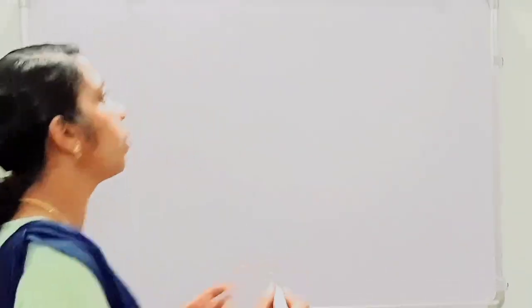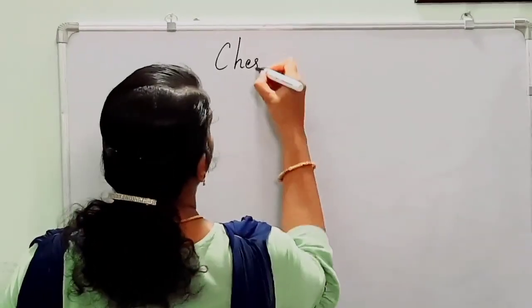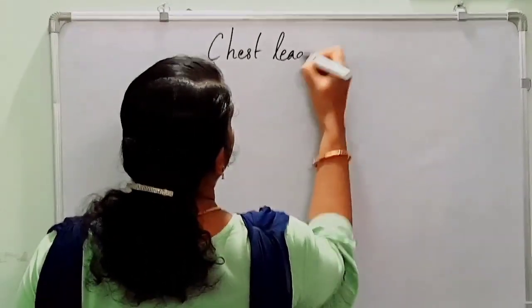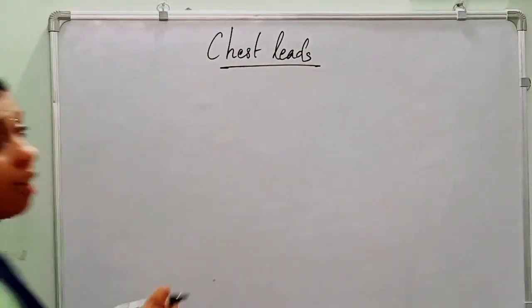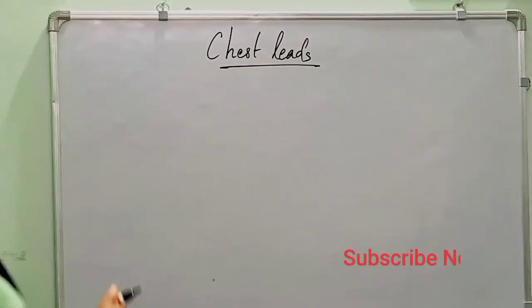We are discussing about the standard 12-lead ECG. In a 12-lead ECG, in the last class we discussed that there will be 10 electrodes and 12 leads. Today we will see the position of the chest leads. There are 6 chest leads.